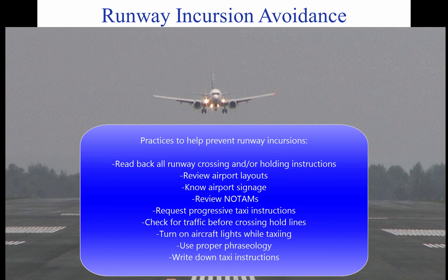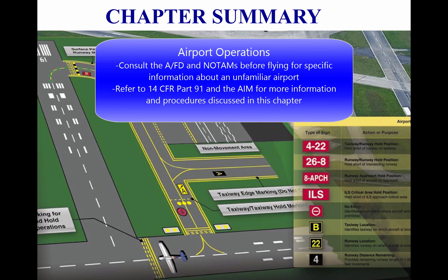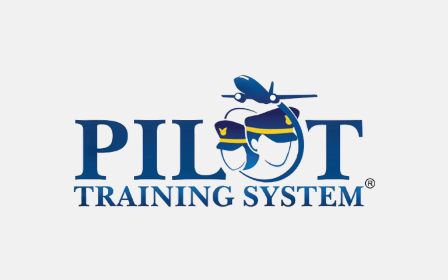For more detailed information, contact the FAA's Office of Runway Safety and Operational Services at www.faa.gov/runway-safety. This tutorial focused on airport operations, both in the air and on the surface. For specific information about an unfamiliar airport, consult the AFD and NOTAMs before flying. For further information regarding procedures discussed in this chapter, refer to 14 CFR Part 91 and the AIM. By adhering to established procedures, both airport operations and safety are enhanced.